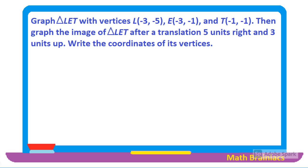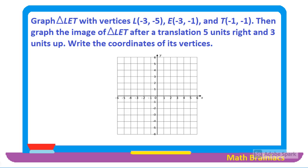We are going to draw the coordinate plane so that we can plot the points. For point L, x is −3 and y is −5. For point E, x is −3 and y is −1. And for point T, x is −1 and y is −1. We are going to connect the points with a straight line.